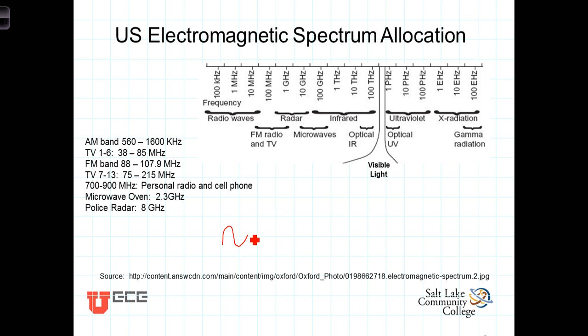A carrier is a sinusoidal waveform. In the case of, say, some radio station is broadcasting at 1160 kilocycles per second or kilohertz, the carrier cycle or the carrier waveform itself would be oscillating at 1160 cycles per second.